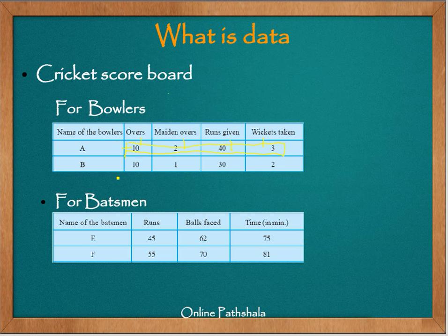The same is with bowler B. There are some numbers here — 10, 1, 32 — which actually talk about how many overs bowler B has bowled, what are his maiden overs, how many runs he has given, and how many wickets he has taken. When these numbers are associated with the particular properties of overs and maiden overs of bowler A and B, they try to give some information.